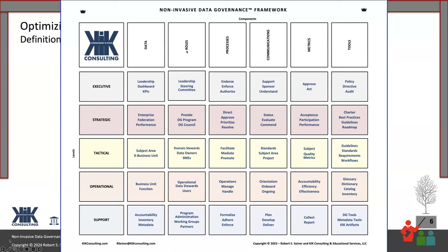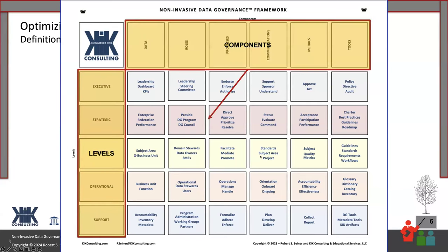Here's a larger version of the blank framework. I've used this framework in several tutorials at DataVersity events, where we start with a blank framework and by the end have started to fill it in. Here's an example of what one of those frameworks looks like filled in, highlighting the six core components. I define the core components as data roles, processes, communications, metrics, and tools. I've had clients and conference attendees suggest additions like business outcomes and engagement, but you may be able to address those within the existing component names.